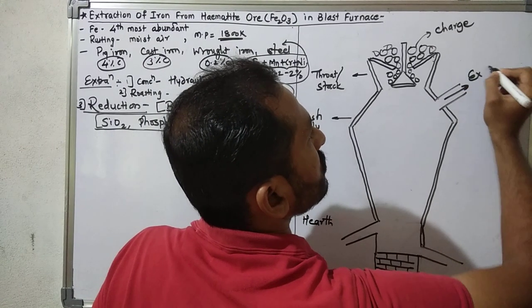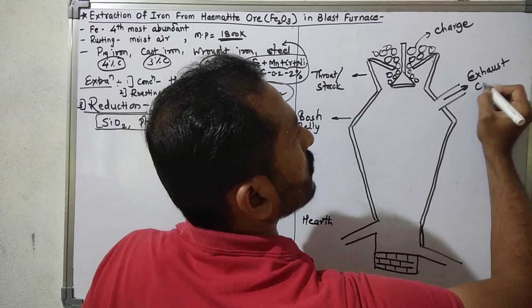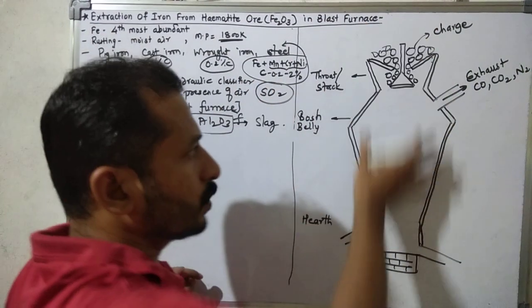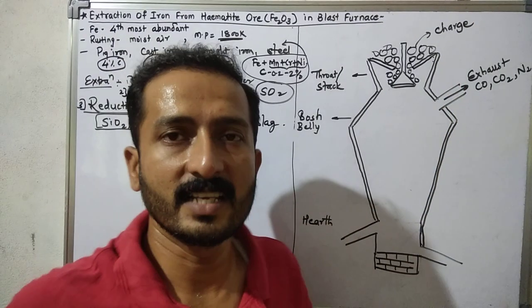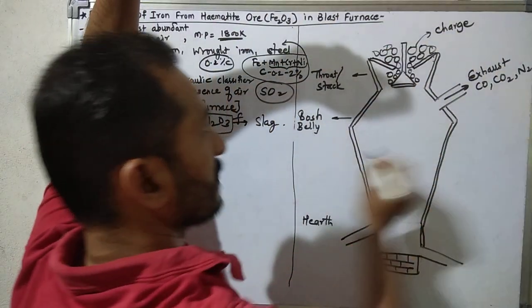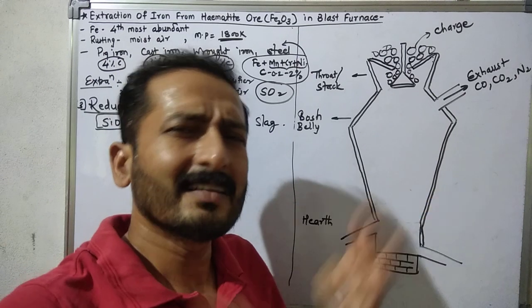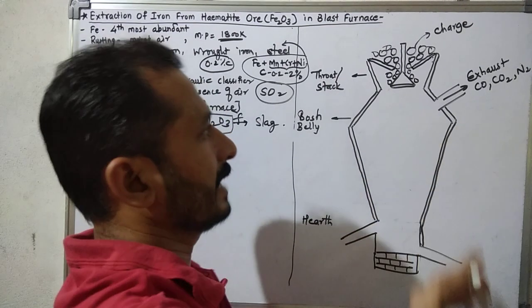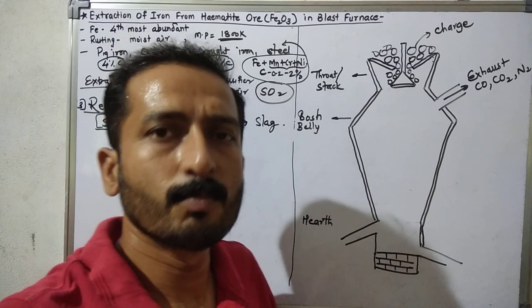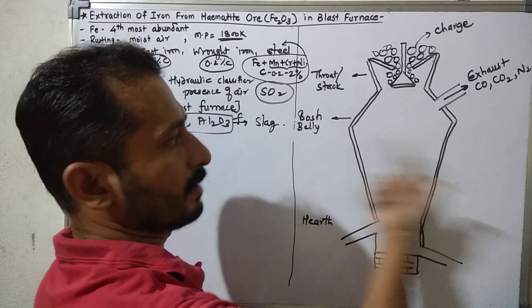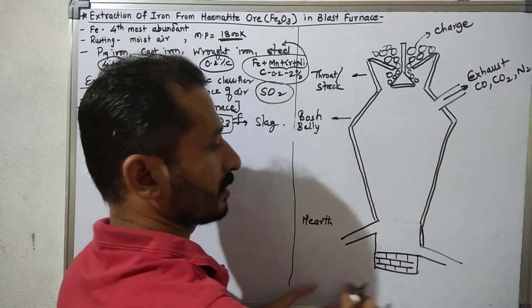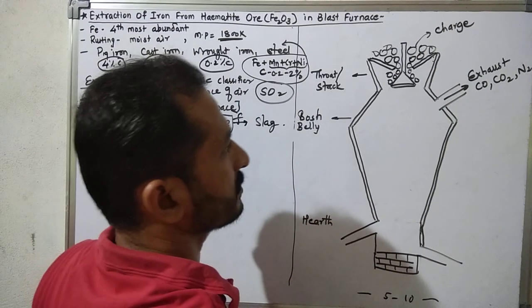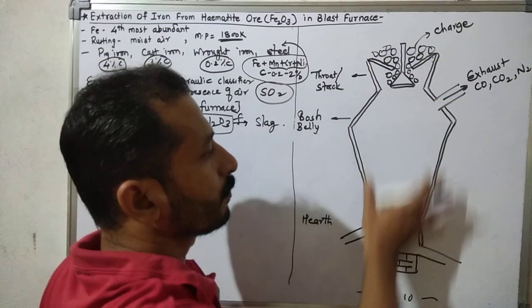This portion is called the throat or stack. This portion is called the bush or belly. And this portion is called the hearth. In this region, there is an exhaust for the release of waste gases like H2O, CO2, and N2. This total blast furnace is near about 25 meter height. If we take the diameter, it is near about 5 to 10 meters.